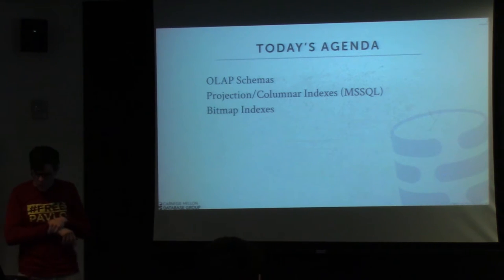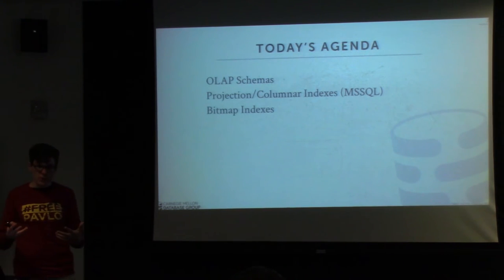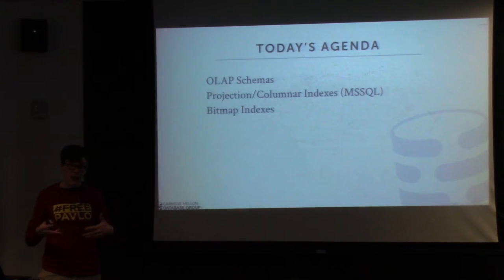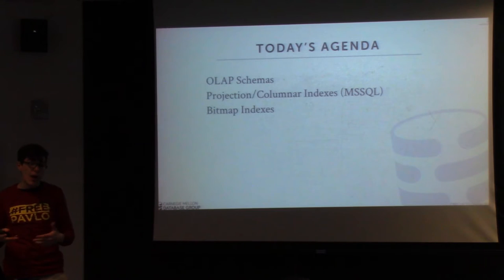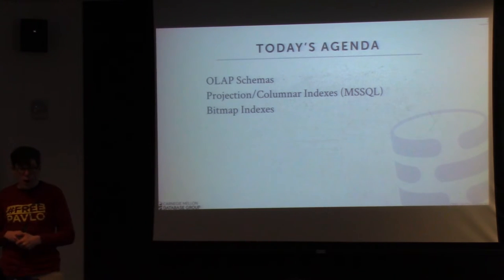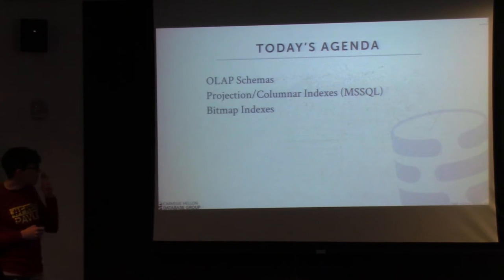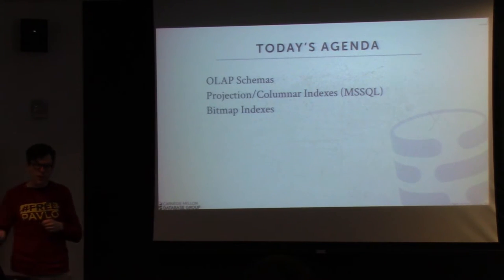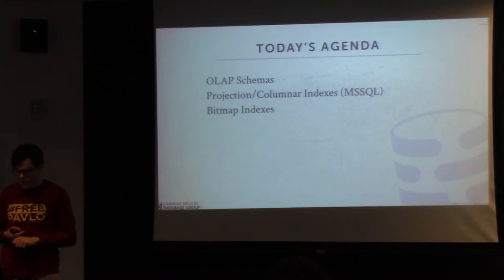So for today's class, we're now going to switch and start talking about more OLAP things. Up until this point in the semester, we've been focusing on transaction processing and latch-free indexes to do fast transaction lookups. Now we're going to start switching gears and bringing in more of the analytical operations we want to do in our database system, and we're going to see what components we need to accelerate these types of queries, because they're going to be much different than the transaction processing workloads we've looked at so far. We'll start off talking about different types of OLAP schemas, then talk about projection and columnar indexes from the SQL Server paper you guys read, and spend most of the second half of the lecture talking about bitmap indexes — these are the most common type of index for OLAP queries.